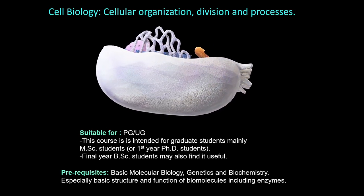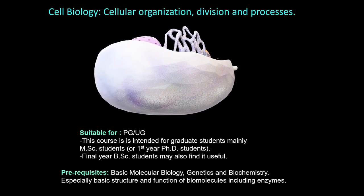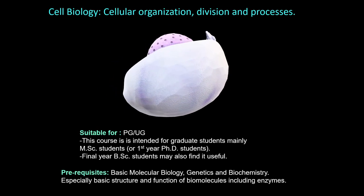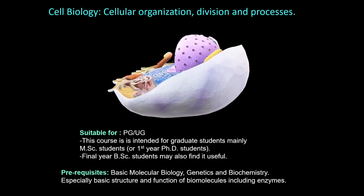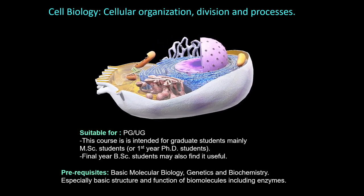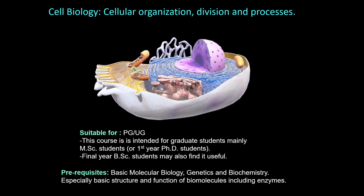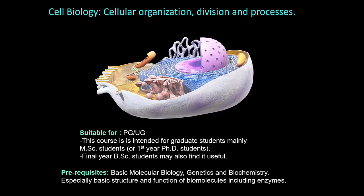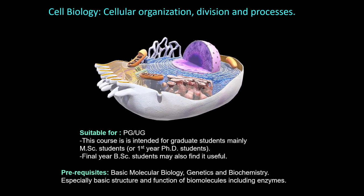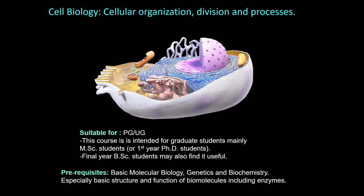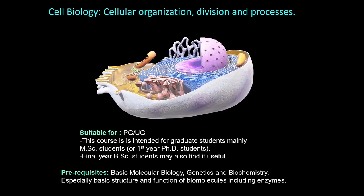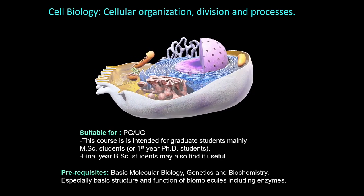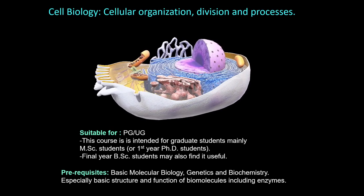It is intended for graduate students, mainly MSc and first year PhD students. Final year BSc students or undergraduate students may also find it useful. The course focuses on cell organization and the molecules and intracellular processes crucial for life and inheritance. A particular emphasis is on DNA transactions such as chromosome organization, replication, chromosome segregation, etc.